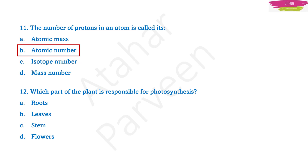Question number twelve: which part of the plant is responsible for photosynthesis? The options are roots, leaves, stem, flowers. Of course, the part of the plant responsible for photosynthesis is leaves, because they have chlorophyll. Using that chlorophyll, they make food for the plant, and that process of preparing food in the presence of sunlight is known as photosynthesis.